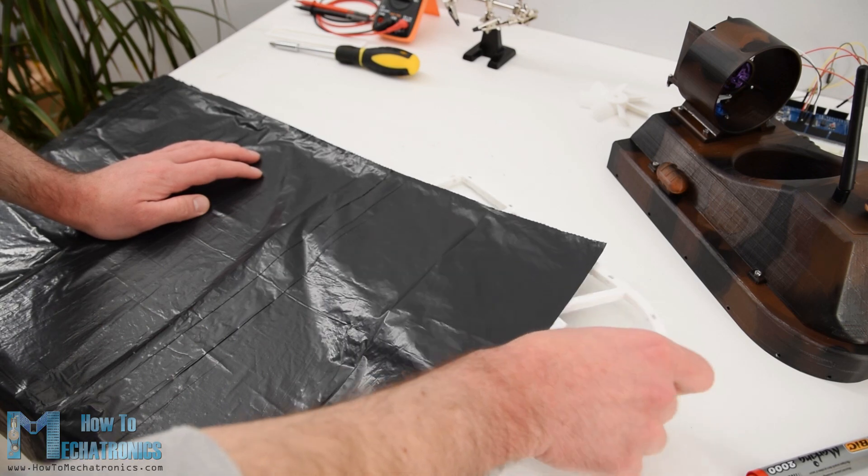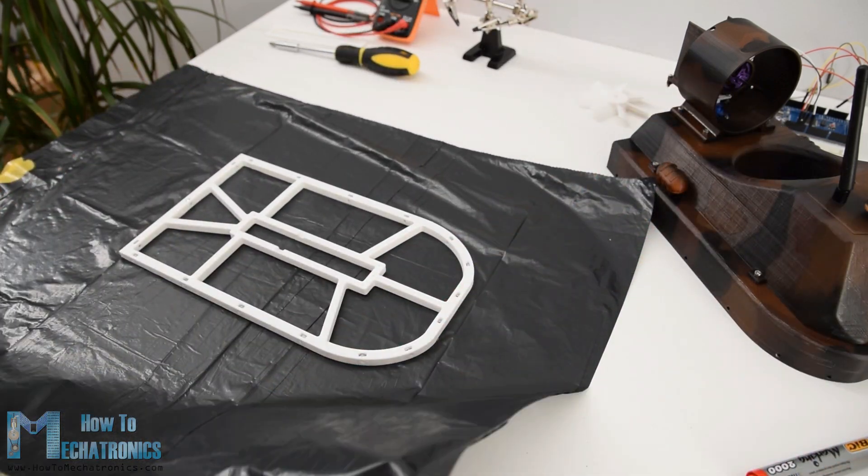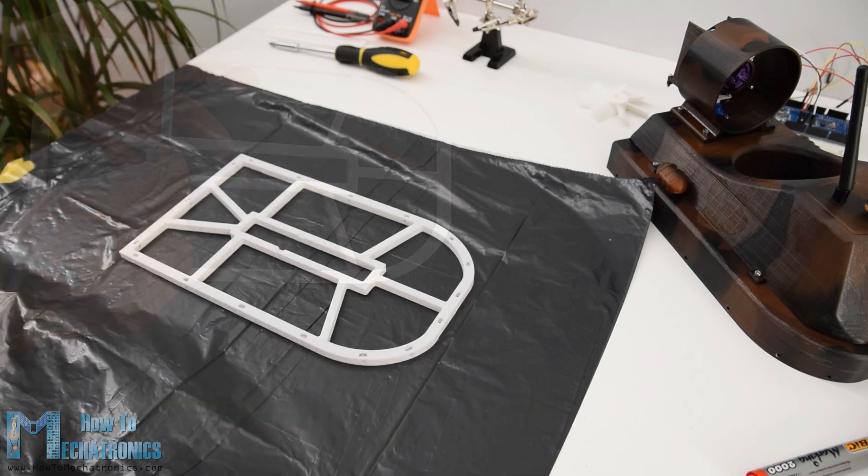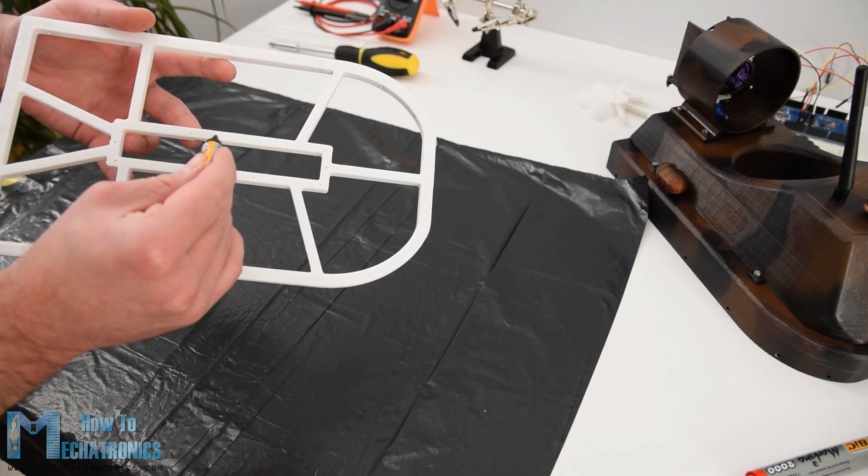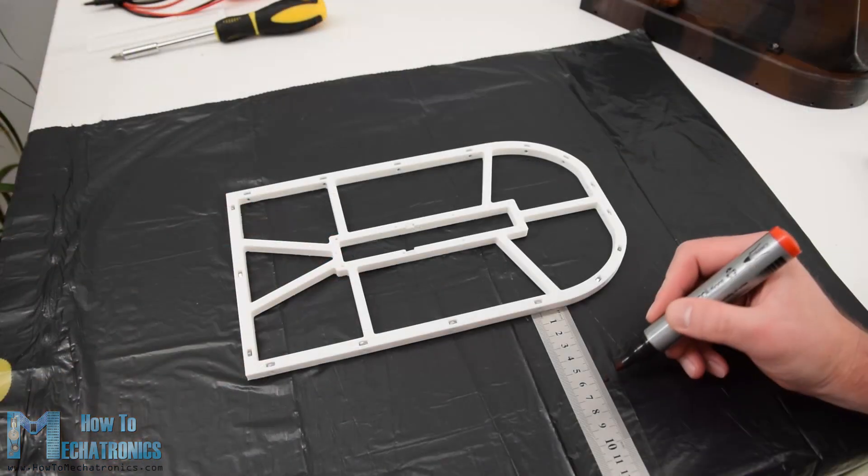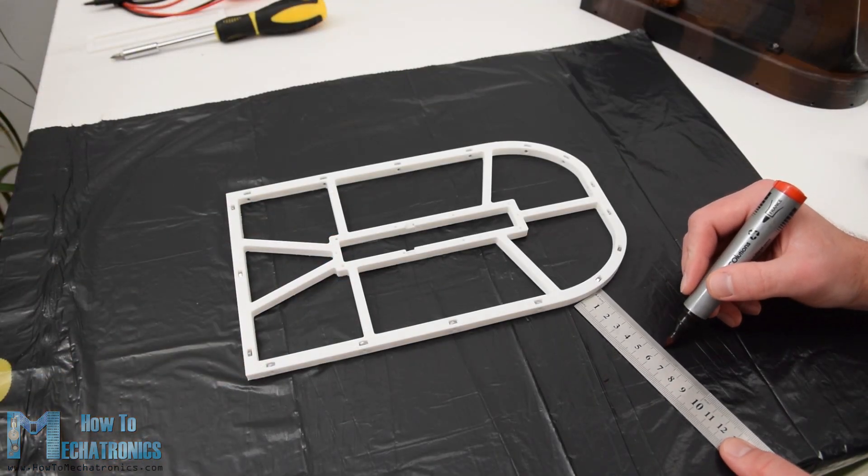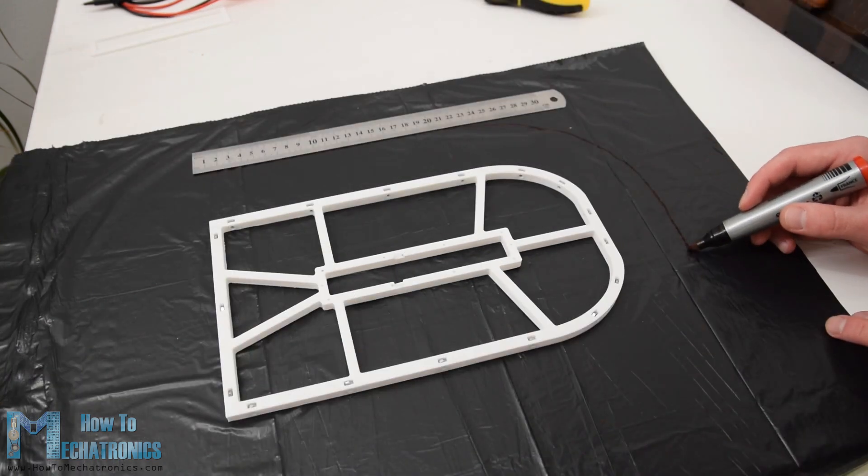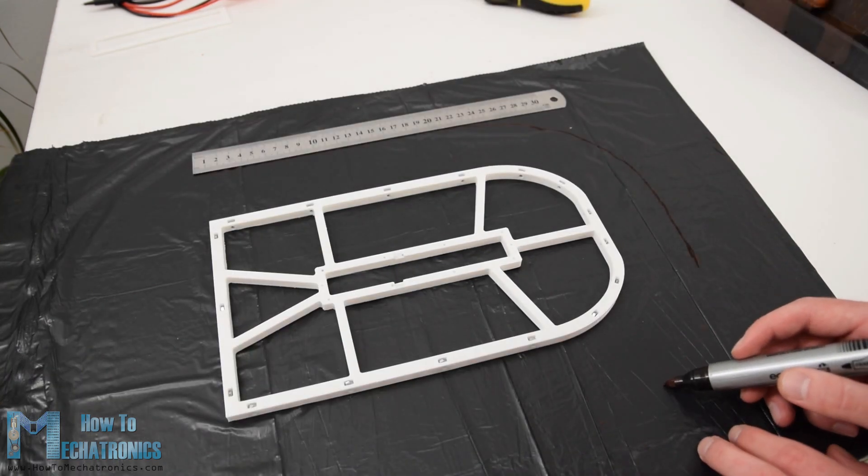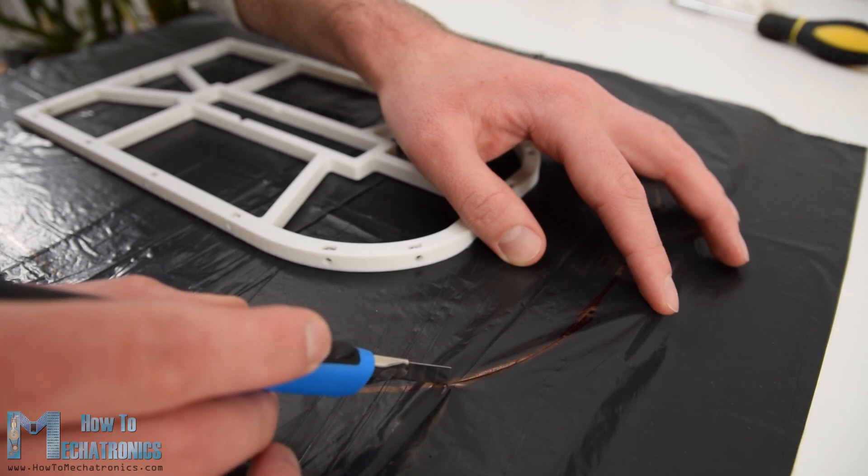Once I secured all of the nuts in place I continued with making the skirt for which I used a simple trash can plastic bag. So first I applied AC glue to the middle area of the holder and then glued it to the plastic bag. Then I offset the perimeter of the holder at around 6 cm. I marked it at several points and then connected them together. Using a utility knife I cut the plastic bag to the proper size.